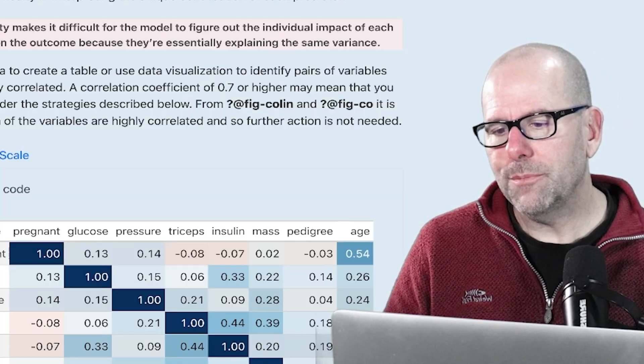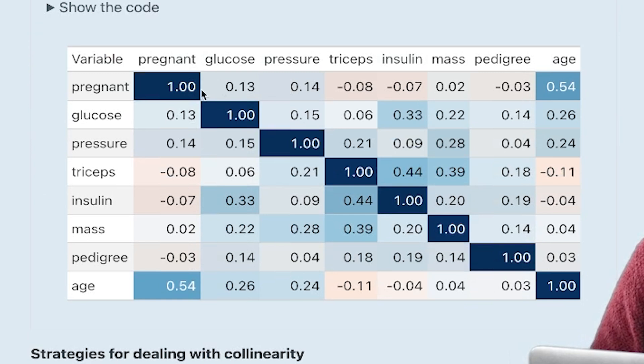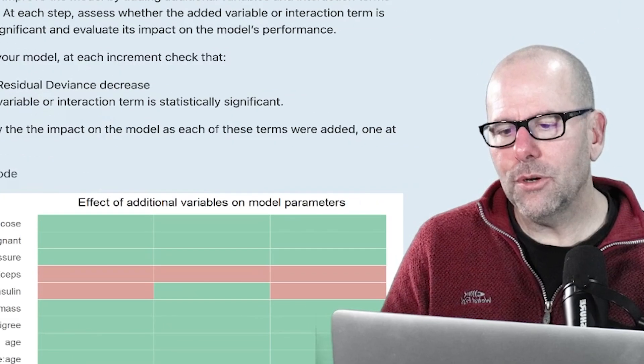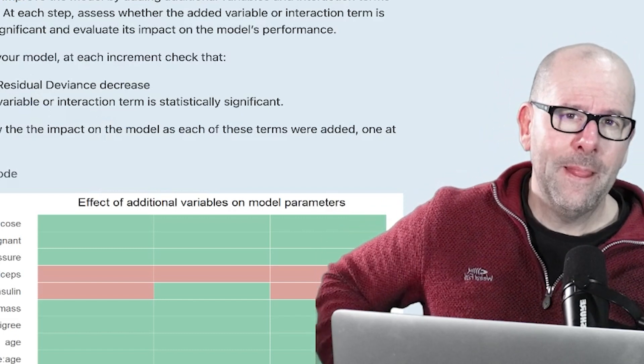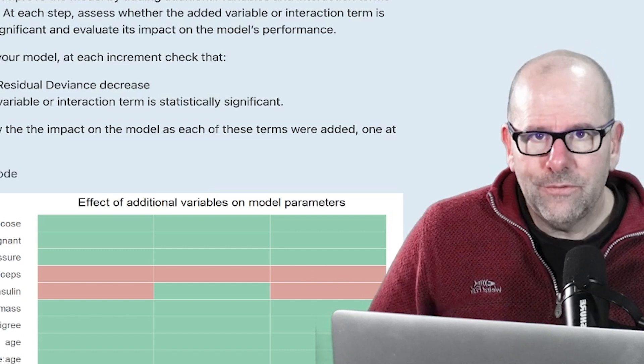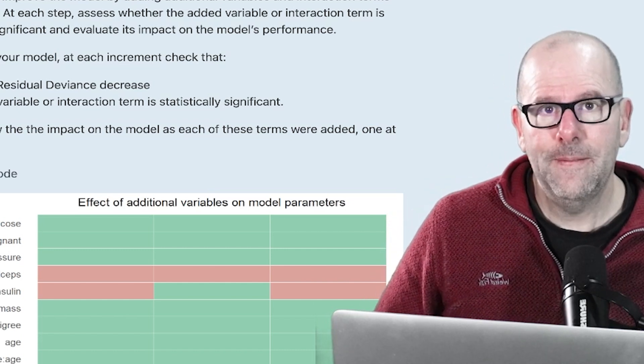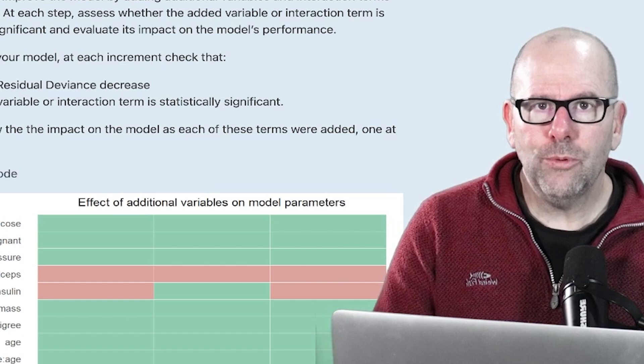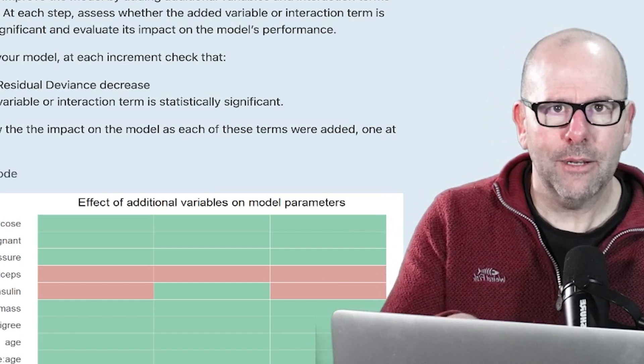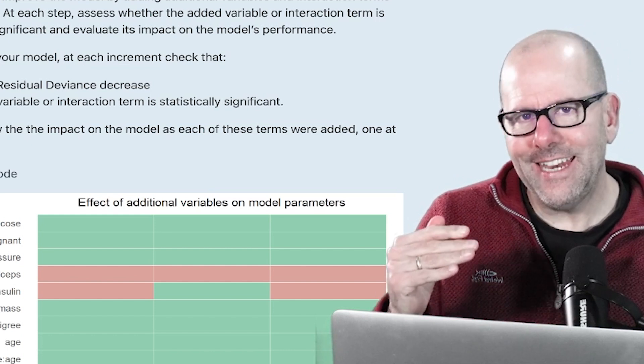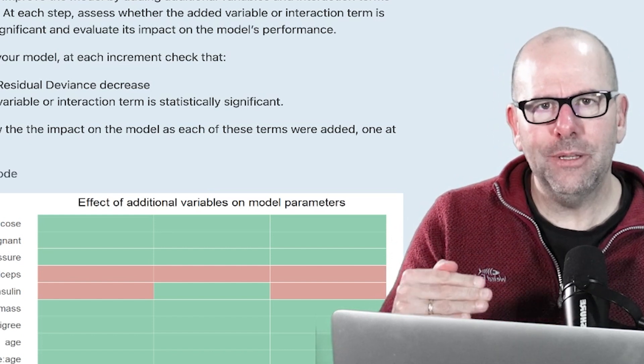So you need to think about these things before you start building the model. And one of the things that we said is even before you start building the model, just check the correlation coefficients of all of your variables against each other. So these are pairwise correlation coefficients and all of these are low. So we're happy to move forwards and start building the model. How do we start building the model? We do it iteratively. Some people start with all the variables and then take them away one at a time until you get to a point where taking away an additional variable doesn't have any effect. I like to do it the other way, which is start with, in this case, because we're talking about diabetes, we start with glucose because it's the most obvious thing to think about when you're talking about diabetes risk.